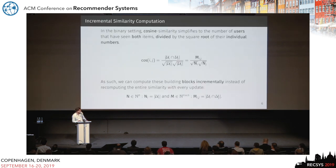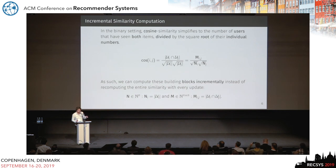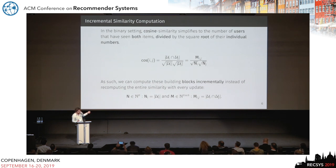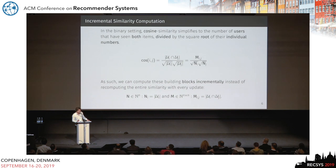One thing that's actually pretty simple: if your data is binary — so you just have zeros and ones — the cosine similarity reduces to the number of users that have seen item i, the number of users that have seen item j, and the number of users that have seen both, divided by the square root of their individual counts. Instead of always recomputing the cosine similarity, you can just use these building blocks. So we're going to compute the co-occurrence matrix M and a vector of counts m, and then always derive the cosine similarity from these.